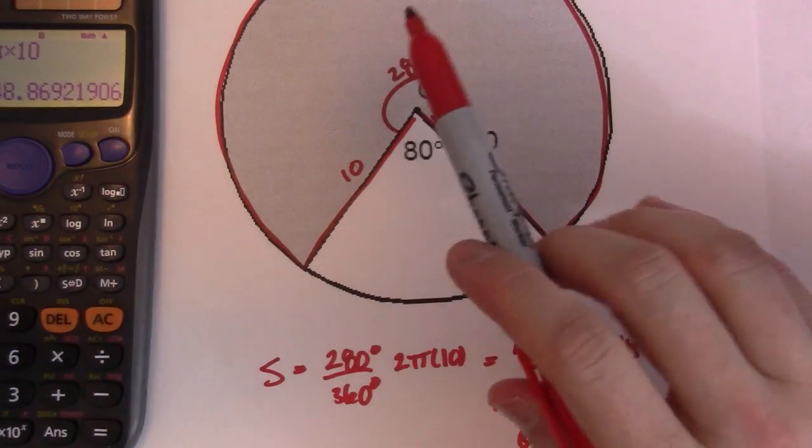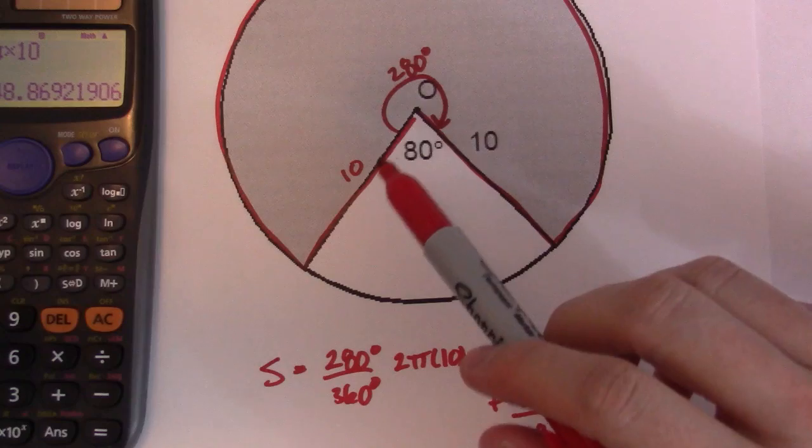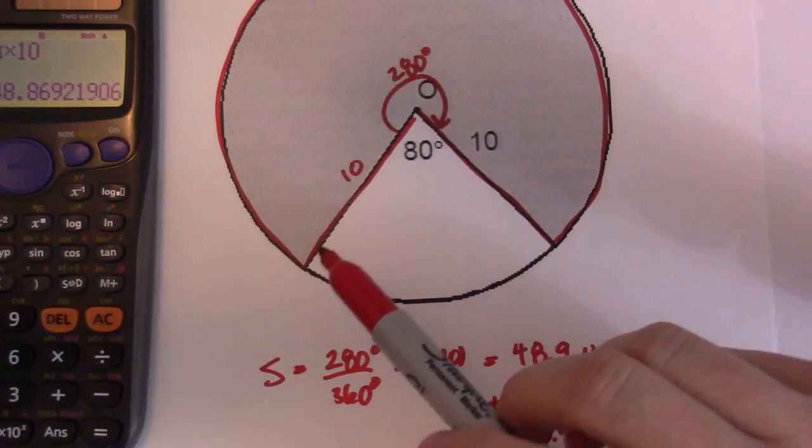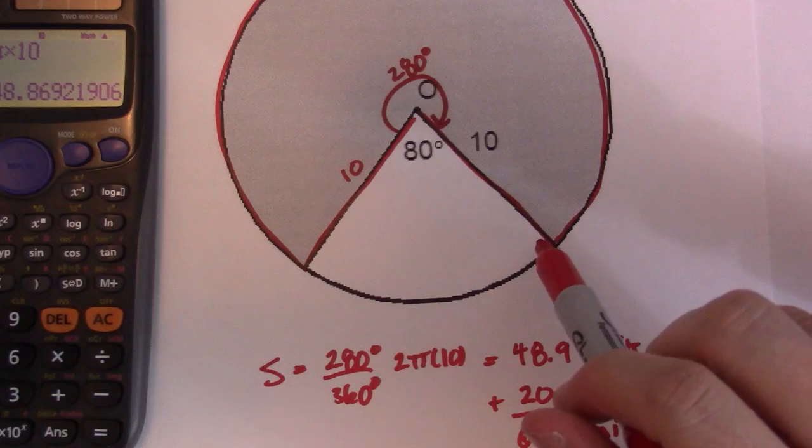So if you end up with the perimeter of the shaded area, the thing that gets often forgot by students is the fact that you need these two radiuses to be included.